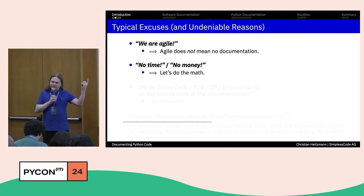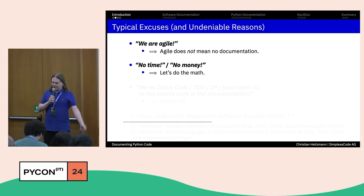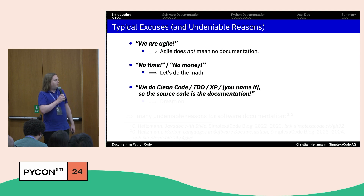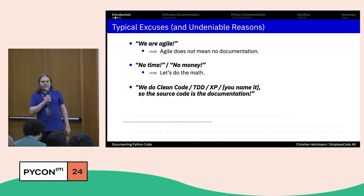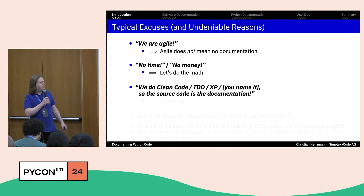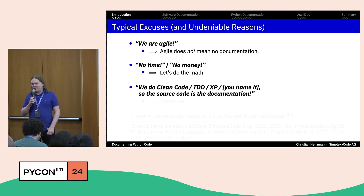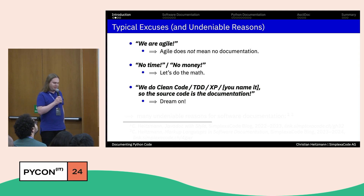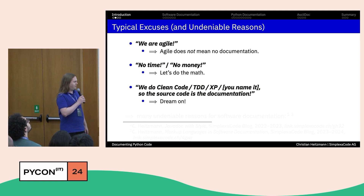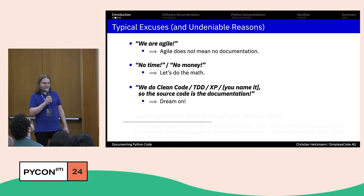The math is pretty simple: just look at how much time and money it costs doing reverse engineering most of the day. Another typical excuse is 'we do clean code, or test-driven development, or extreme programming, therefore the source code is the documentation.' Nope — it's even too silly to discuss this topic. I've never seen that this is really the case.